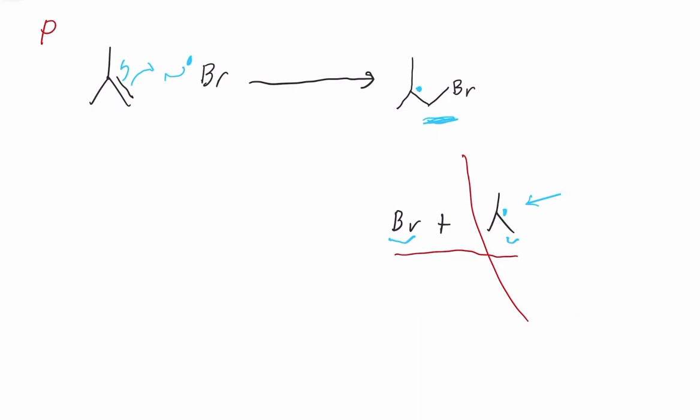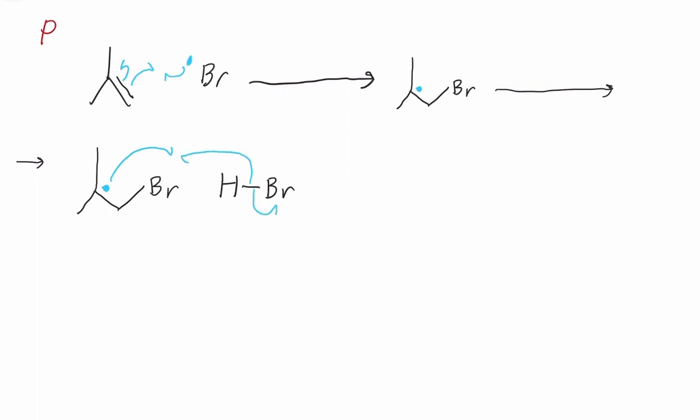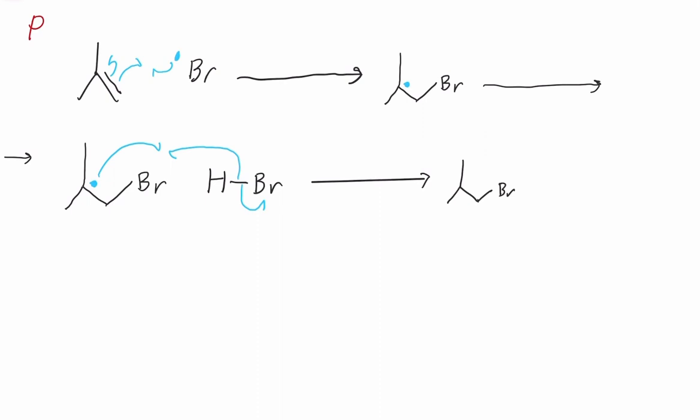But we're not done. Propagation continues using the product of that first step as an intermediate, which essentially will steal the hydrogen from another hydrogen bromide like this, using fish hooks. It will leave us with the product we're looking for, but we've also regenerated the free radical. And that free radical will go on to react with another molecule of the starting alkene and produce the product as well as another free radical. And this will keep going on and on until it's stopped, which is why it's called the propagation step.